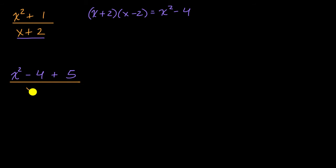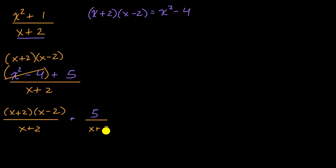But why did I do that? Well, now I can write x squared minus four as x plus two times x minus two. And so then I could rewrite this entire expression as x plus two times x minus two, all of that over x plus two plus five, plus five over x plus two.